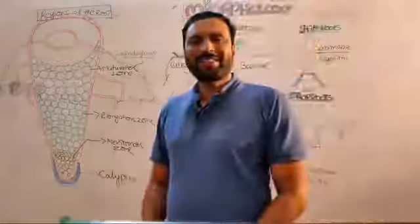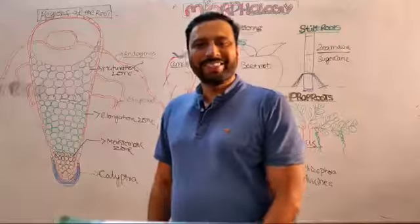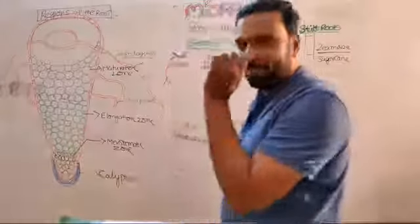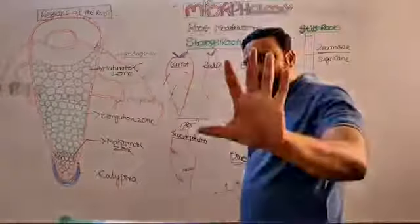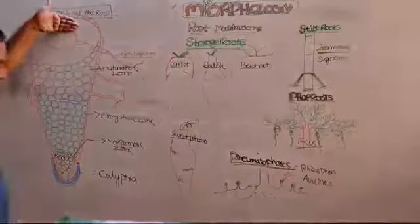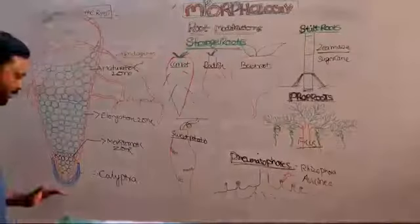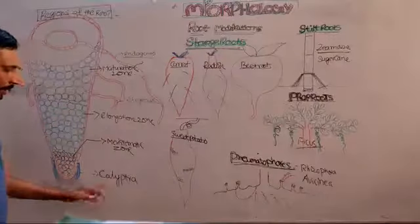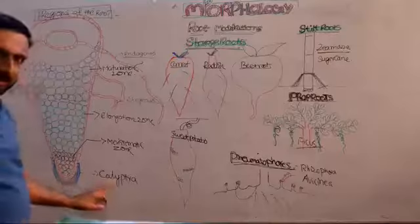Hello, good morning. I am BSR, botany lecturer. So a quick revision on morphology within five minutes. The regions of the root first — the root tip is covered by a protective structure called calyptra.